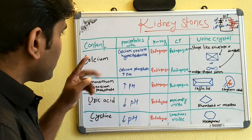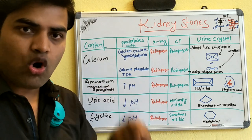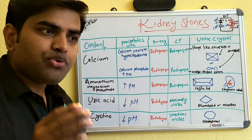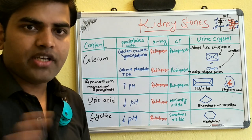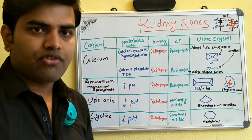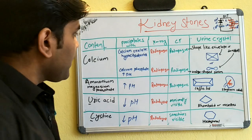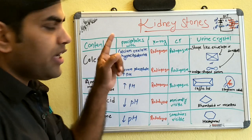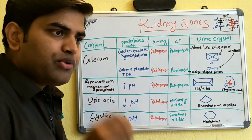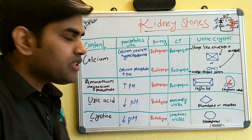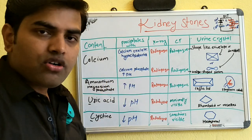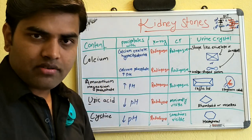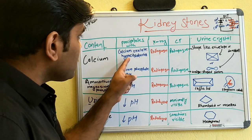Calcium stones can be of two types: calcium oxalate and calcium phosphate. Calcium oxalate stone is the most common type, accounting for 80% of renal stones. You have to remember that calcium oxalate stone occurs in a patient who has hypocitraturia.